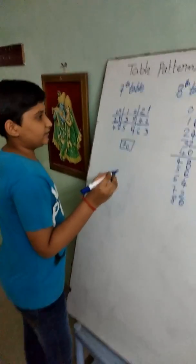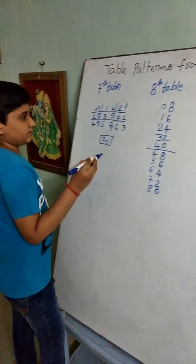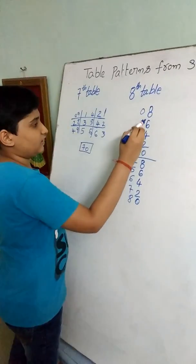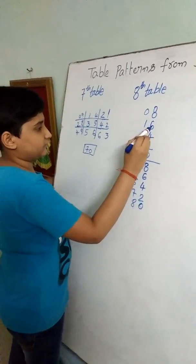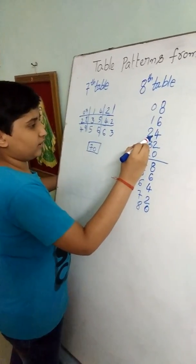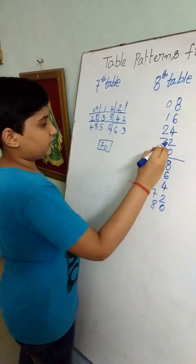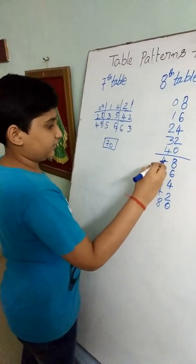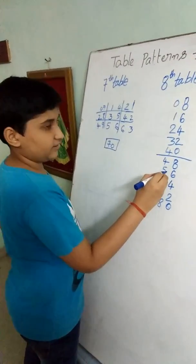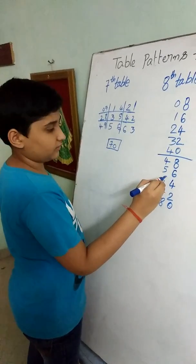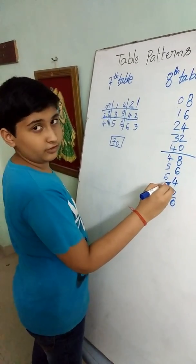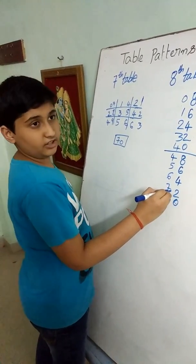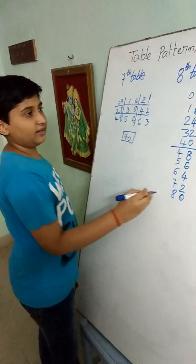This is the 8th table: 8 ones are 8, 8 twos are 16, 8 threes are 24, 8 fours are 32, 8 fives are 40, 8 sixes are 48, 8 sevens are 56, 8 eights are 64, 8 nines are 72, 8 tens are 80.